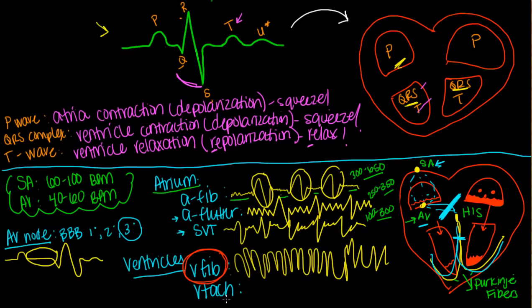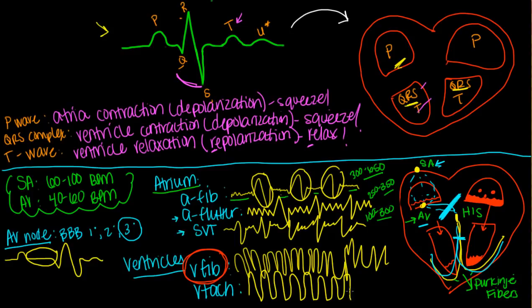In ventricular tachycardia, we have an abnormally fast rate. The ventricles are contracting too quickly with no regard to what's happening in the atria. This looks more like a regular ECG tracing but very, very rapid, with higher, more pronounced and defined peaks in the QRS complex — representing that really fast contraction with no regard to the P wave. I'm going to put up some images so you can see the differences between V-fib and V-tach on an ECG strip.